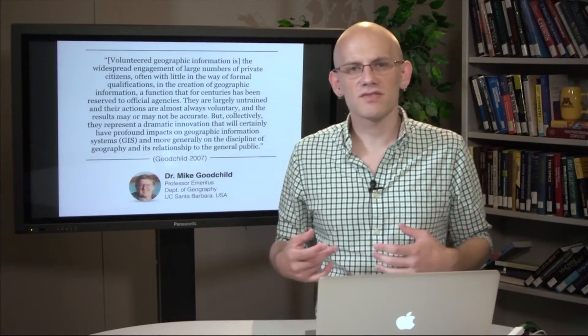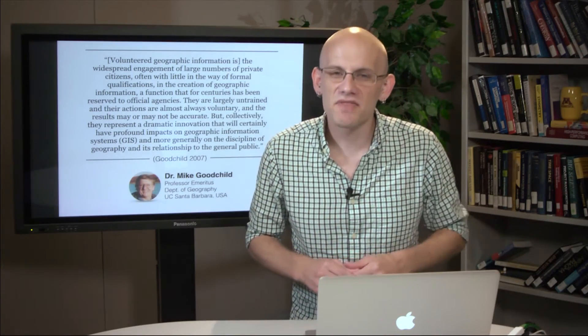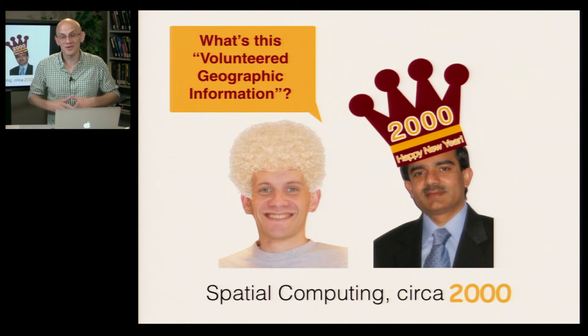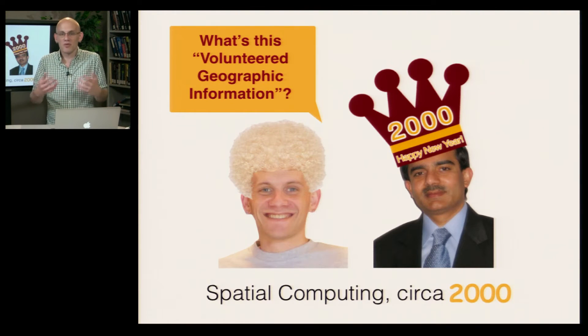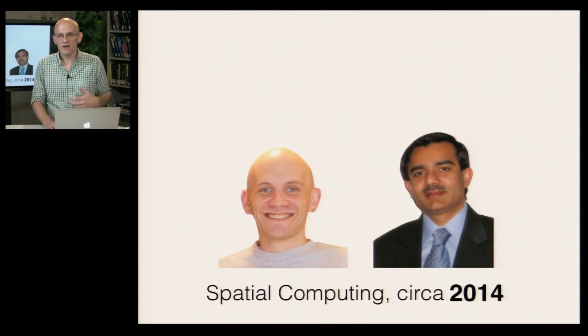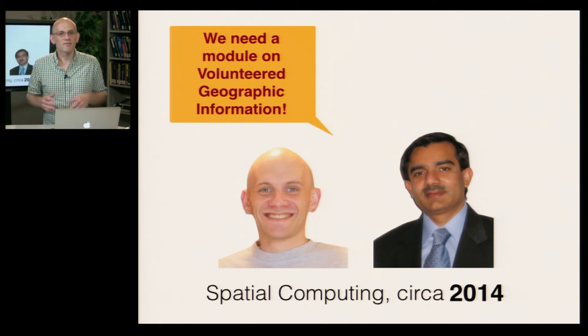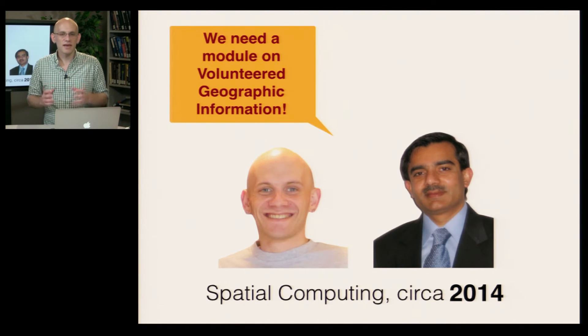For instance, Sarah Elwood, a well-known professor of geography at the University of Washington, has described VGI as potentially one of the most important phenomena to impact the discipline of geography in recent years, and more generally, a profound transformation in how we know the world. Back in the year 2000, two professors deciding what to include in a spatial computing course would never have considered devoting an entire module to geographic information produced by regular people without qualifications. However, in the spatial computing world of 2014, Dr. Shekar and I felt there was no way to teach this course without this material. In just a short period of time, volunteer geographic information has become essential to spatial computing as one of its primary sources of data.